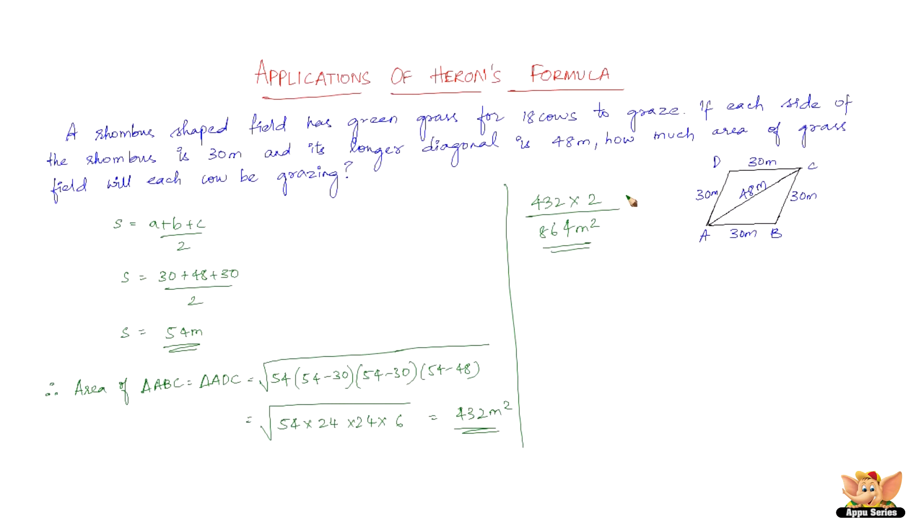The question here is, how much area of grass field will each cow be grazing? There are total 18 cows in all. So 18 cows graze 864 meters square. So one cow gets to graze 864 by 18 which is 48 meters square. Therefore, one cow can graze 48 meters square of grass in the rhombus shaped field.